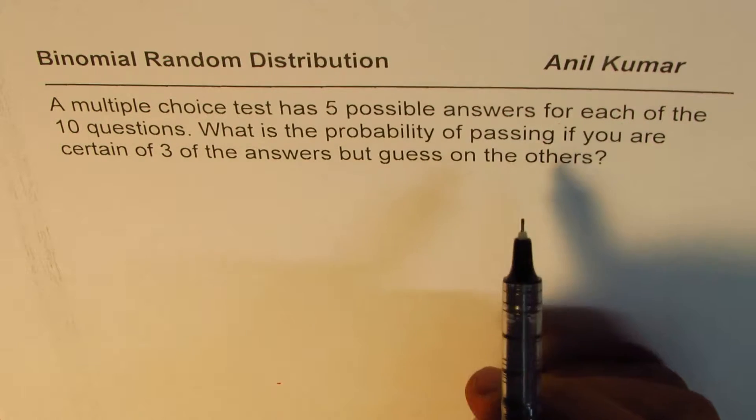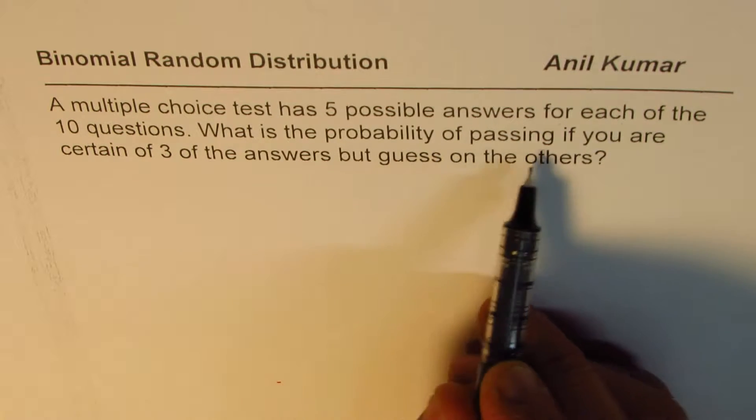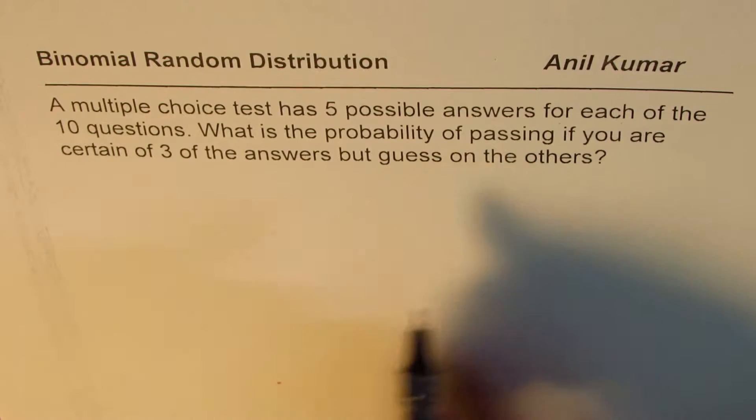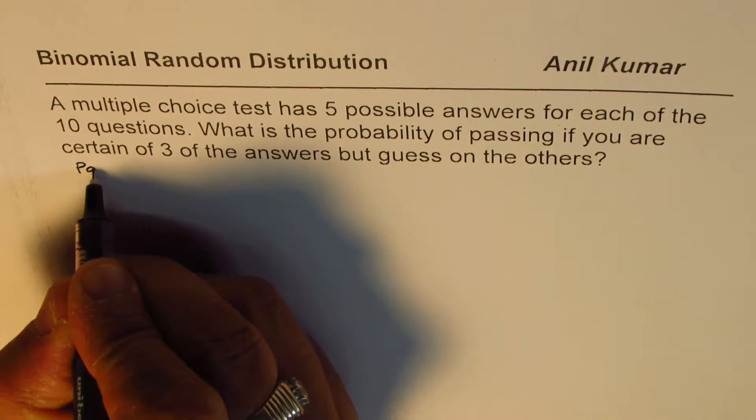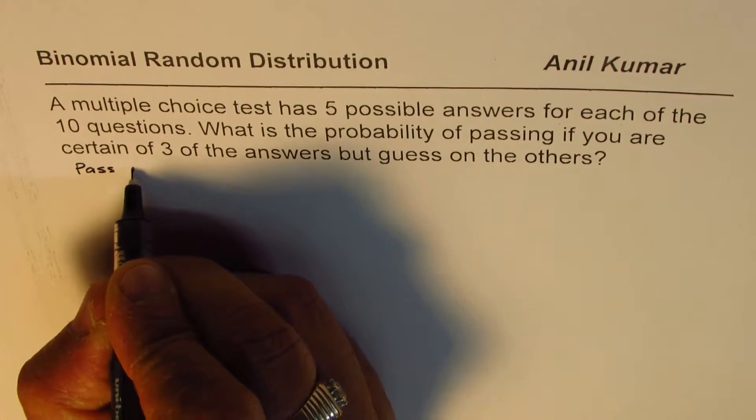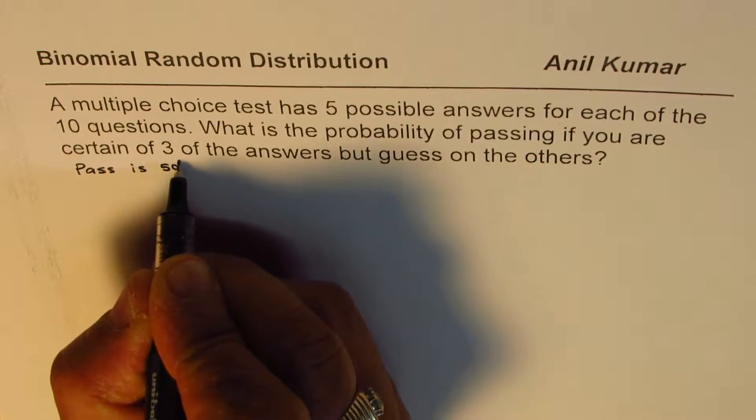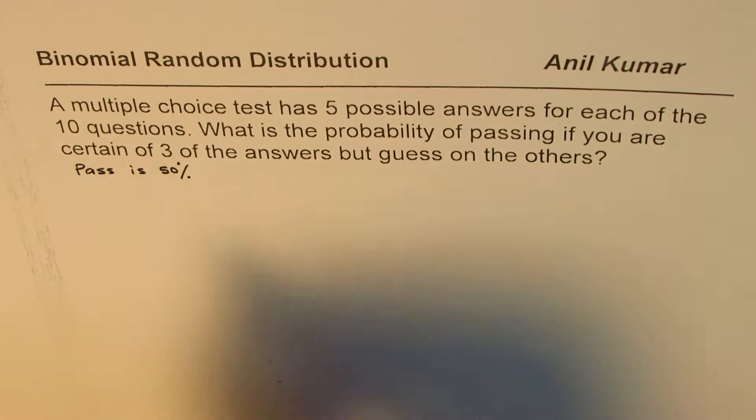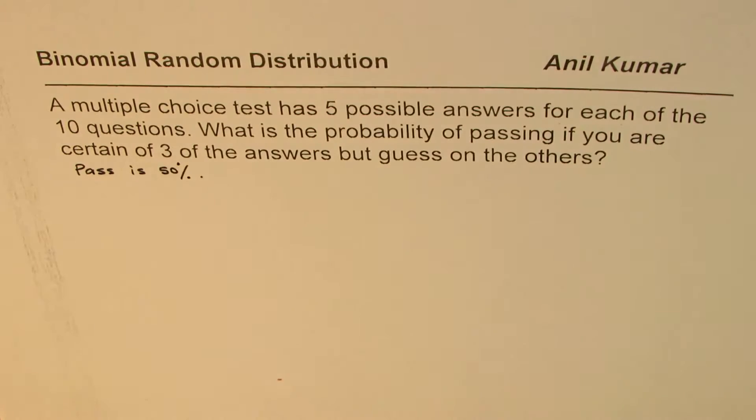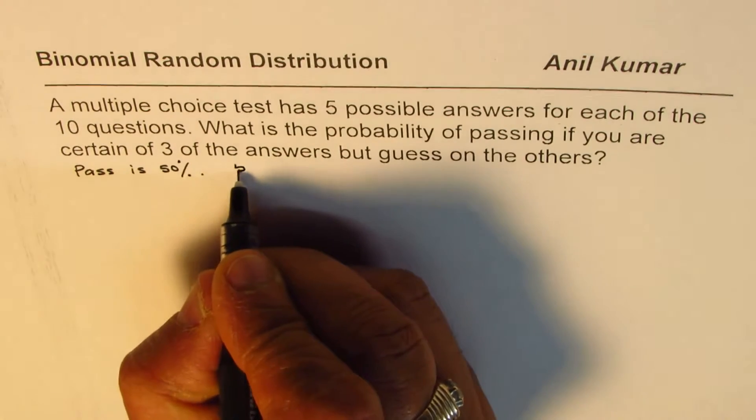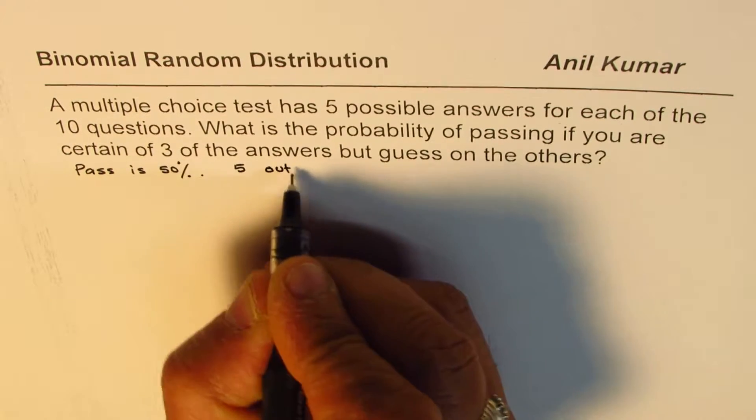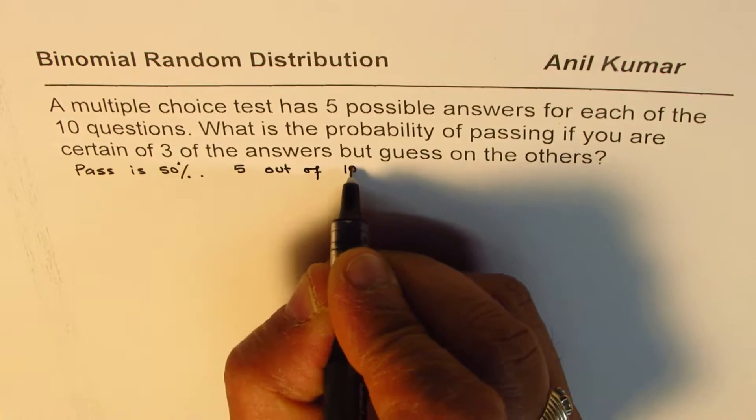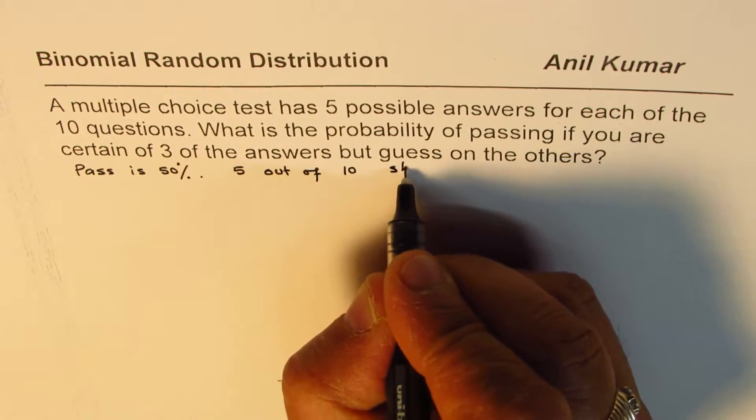Now when we have what is the probability of passing, we will say the pass mark is 50%. So let us assume that if we get 5 correct answers out of 10 you pass. So we will keep that as the passing criteria. That means 5 out of 10 should be correct.